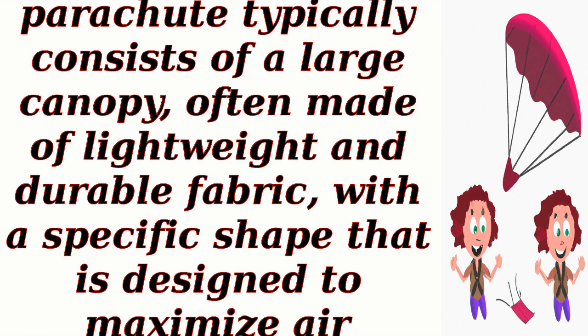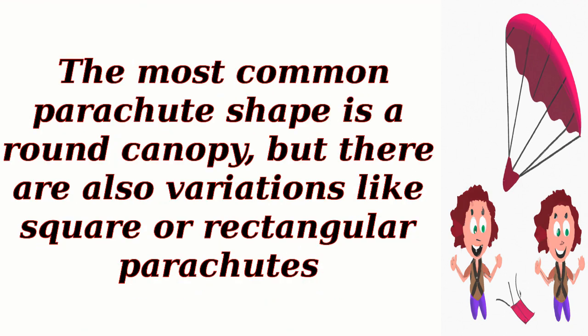Parachute design: A parachute typically consists of a large canopy, often made of lightweight and durable fabric, with a specific shape designed to maximize air resistance. The most common parachute shape is a round canopy, but there are also variations like square or rectangular parachutes.